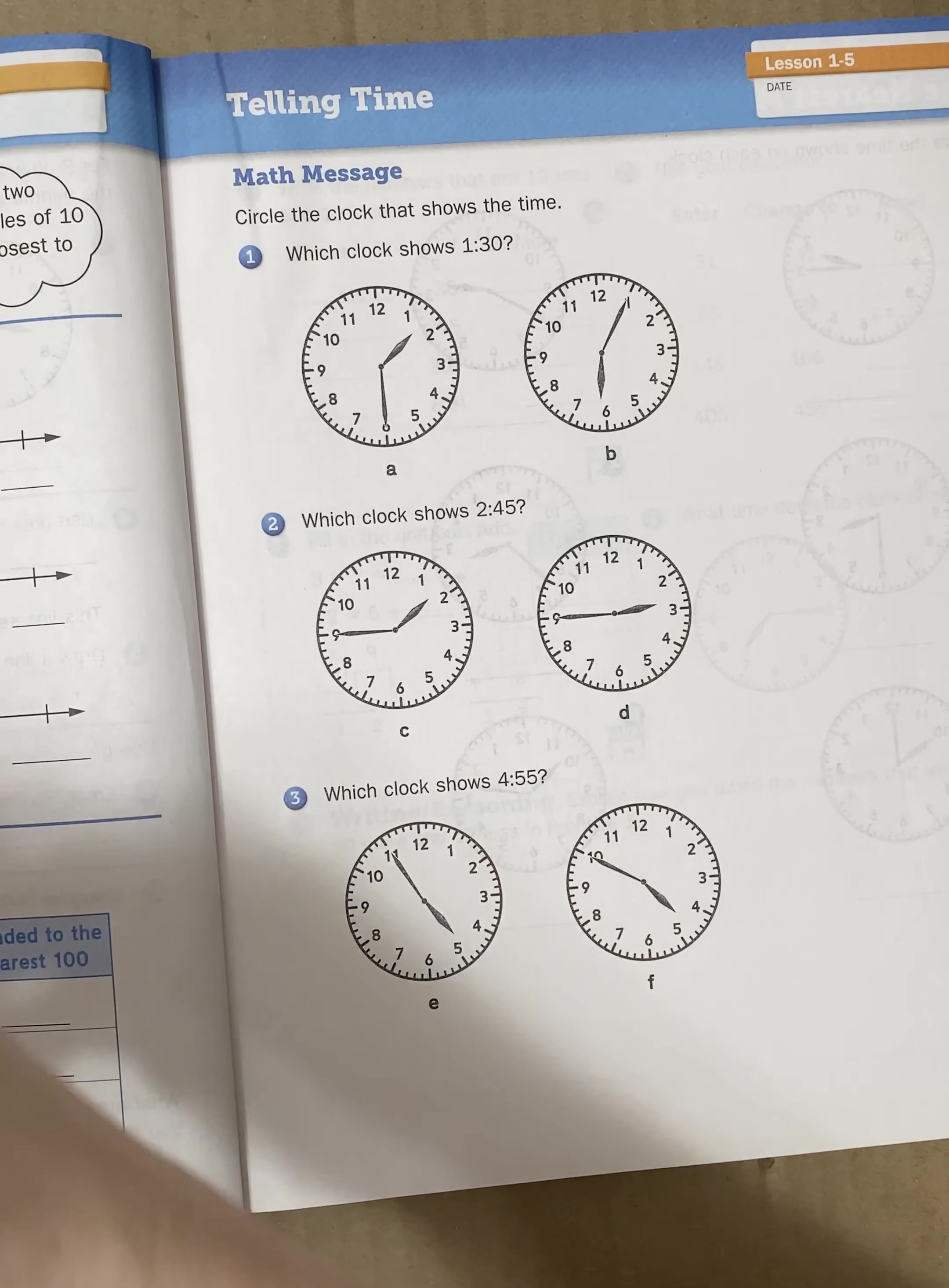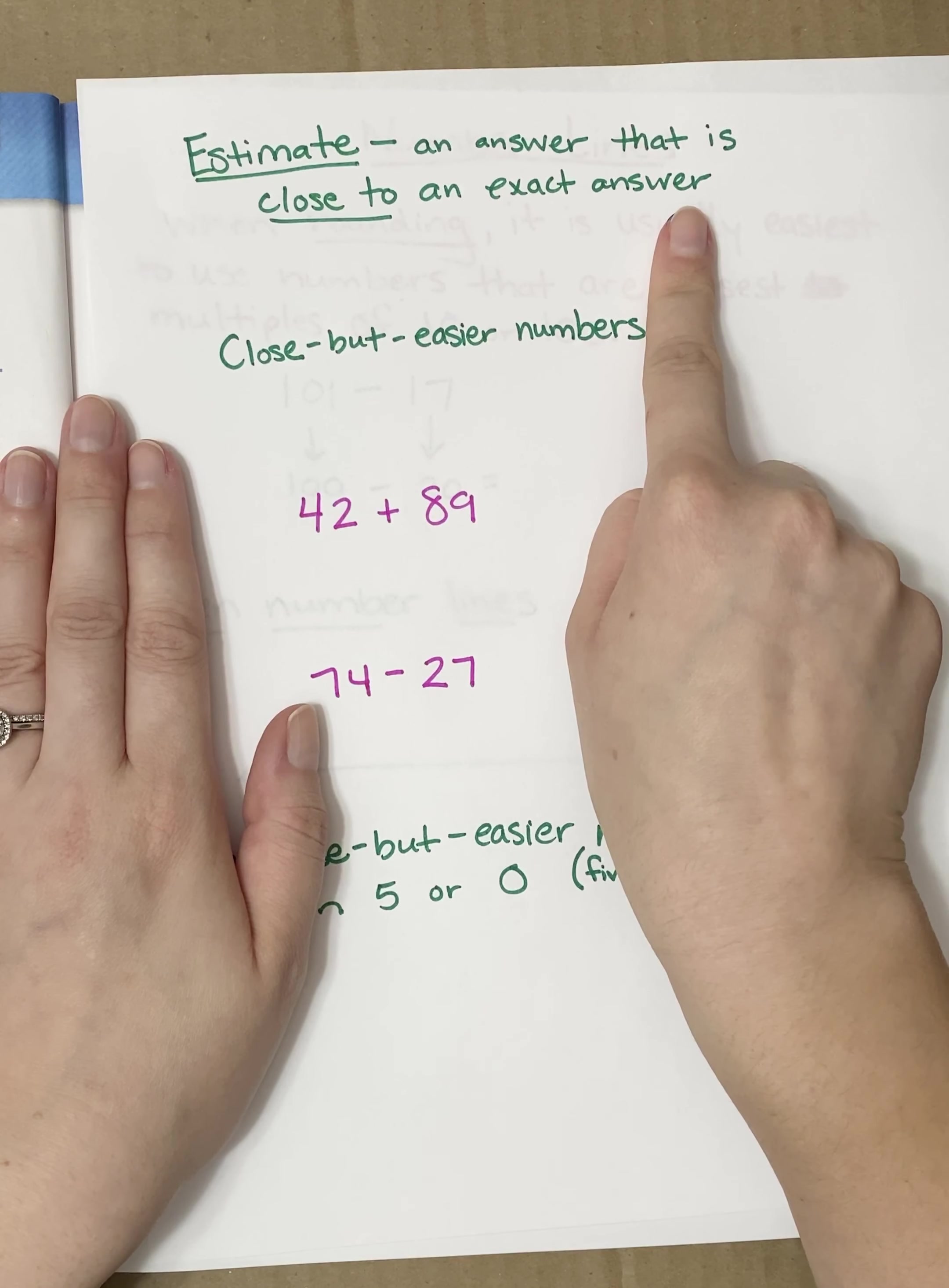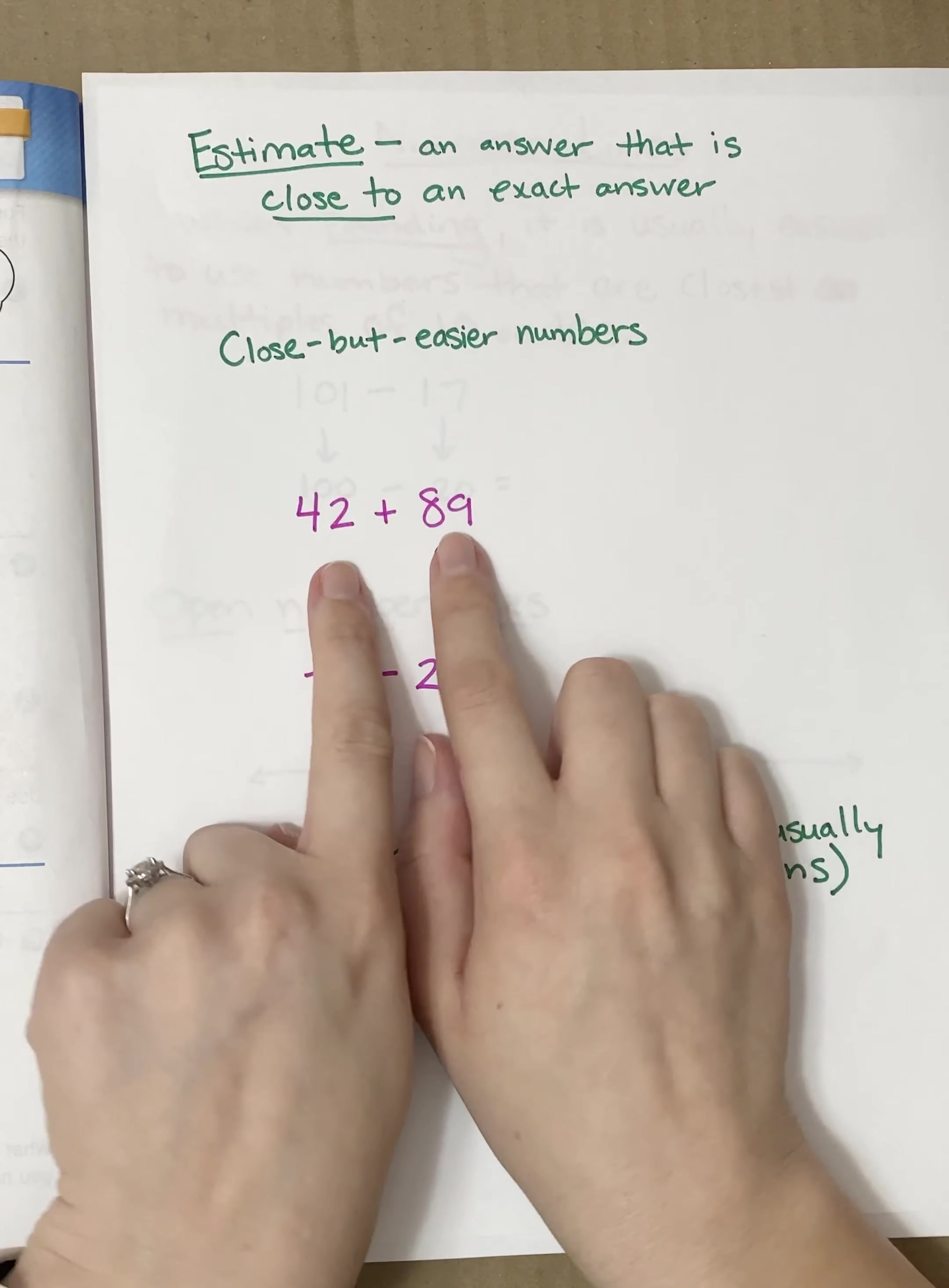A few things that I want to go over with you, some of it will be review, is I want us to go over what an estimate is. An estimate is an answer that is close to an exact answer. So we get into the ballpark as I like to call it. We're not exactly on the right answer but it is close to answer and sometimes we call these numbers close but easier.